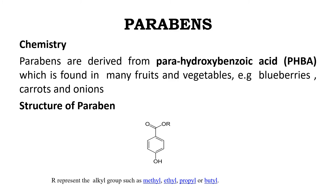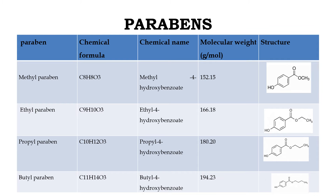As far as the chemistry of parabens is concerned, parabens are basically derived from para-hydroxybenzoic acid, which is found in many fruits and vegetables, for example blueberries, carrots, and onions. If you substitute the R group with an alkyl group such as methyl, it becomes methyl paraben; ethyl gives ethyl paraben; propyl gives propyl paraben; and butyl gives butyl paraben. You can see the chemical structure of the parabens.